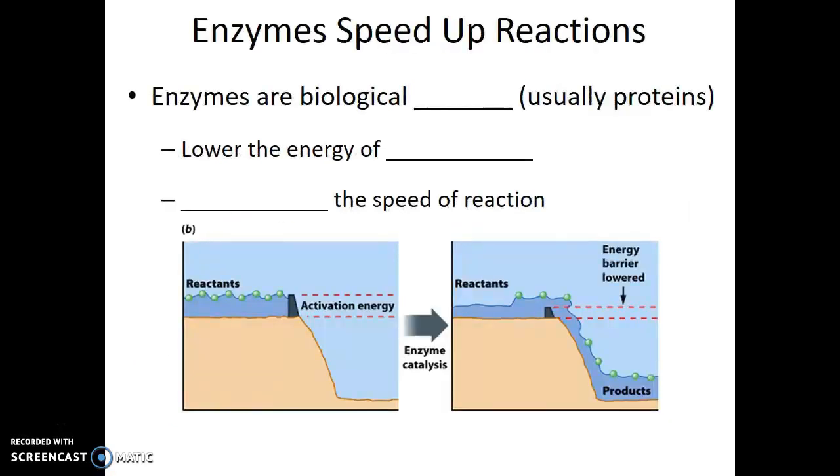Enzymes are biological catalysts. Usually these are proteins within the cell. The way these catalysts work is that they lower the energy of activation, and in this way they can increase the speed of the chemical reaction.